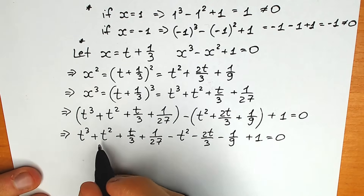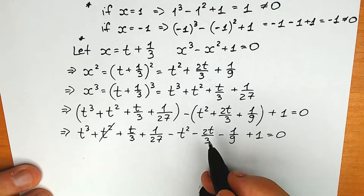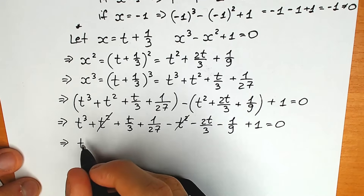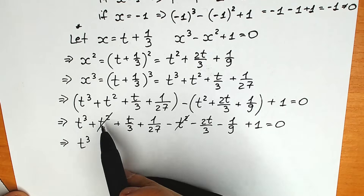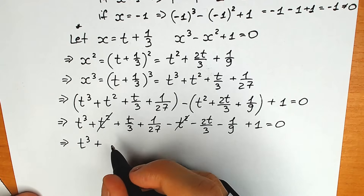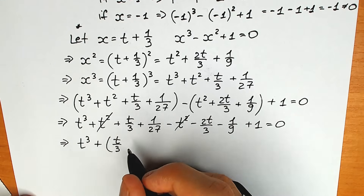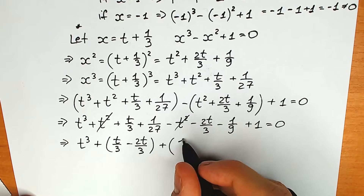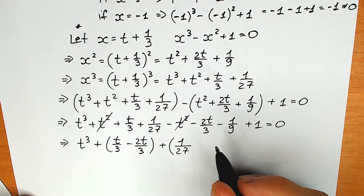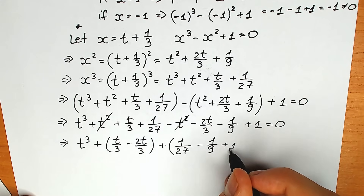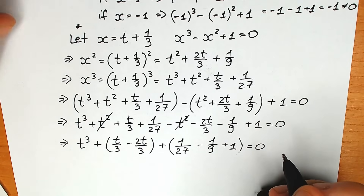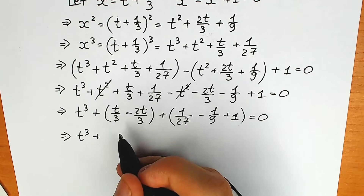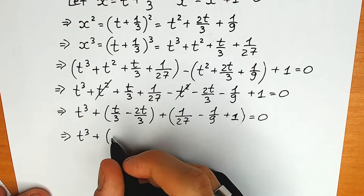We can cancel t squared and minus t squared. We're left with t cubed. For the t terms: t over 3 minus 2t over 3 equals minus t over 3. For the constants: 1 over 27 minus 1 over 9 plus 1. Finding a common denominator of 27: we have 1 minus 3 plus 27 over 27, which gives 25 over 27. So our equation becomes t cubed minus t over 3 plus 25 over 27 equal to 0.